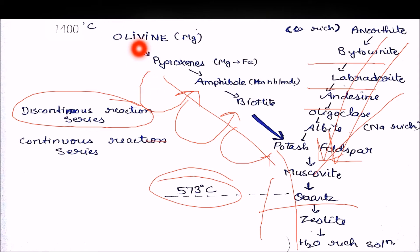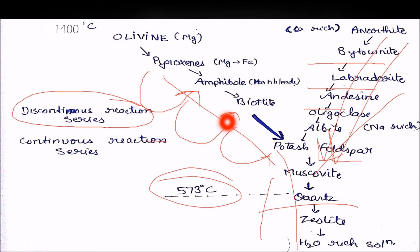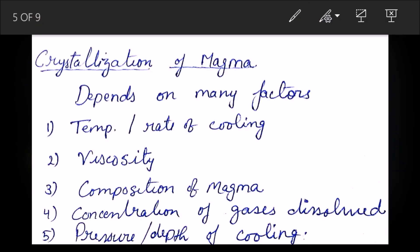For remembering the discontinuous series — olivine, pyroxene, amphibole, biotite — you can use a mnemonic: 'Old Pupils Are Boring.' O for olivine, P for pyroxene, A for amphibole, and B for biotite. Just use that to remember it.